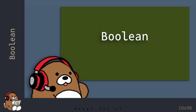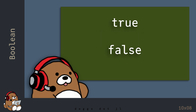In the coding world, a Boolean indicates whether something is true or false. Booleans are at the core of how programming languages get computers to perform tasks that require logical thinking.